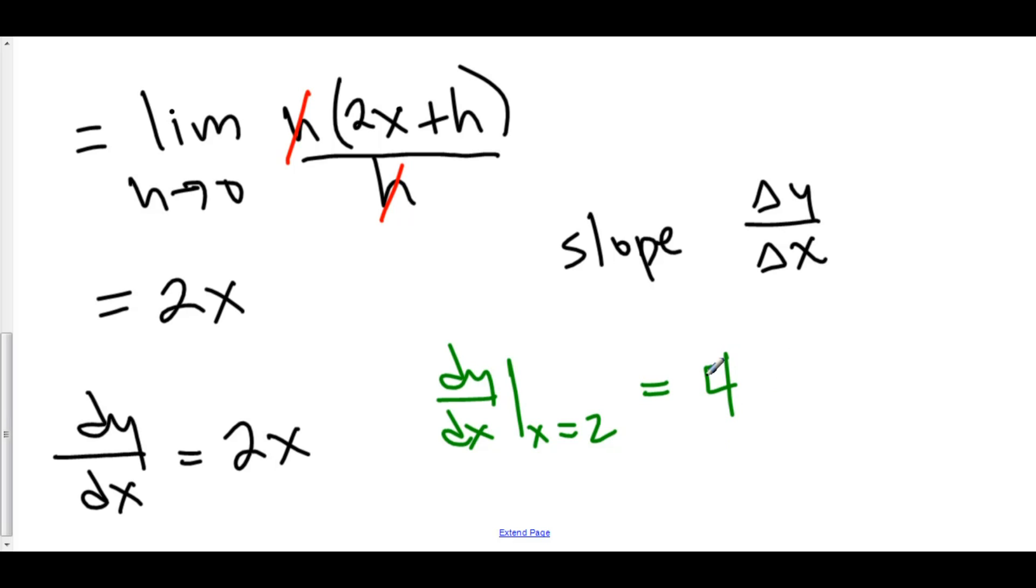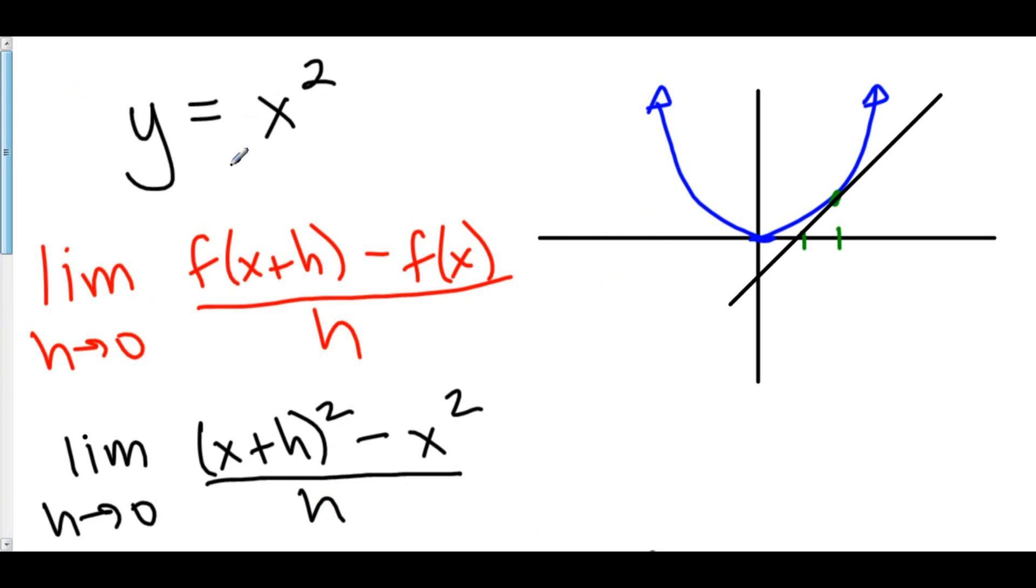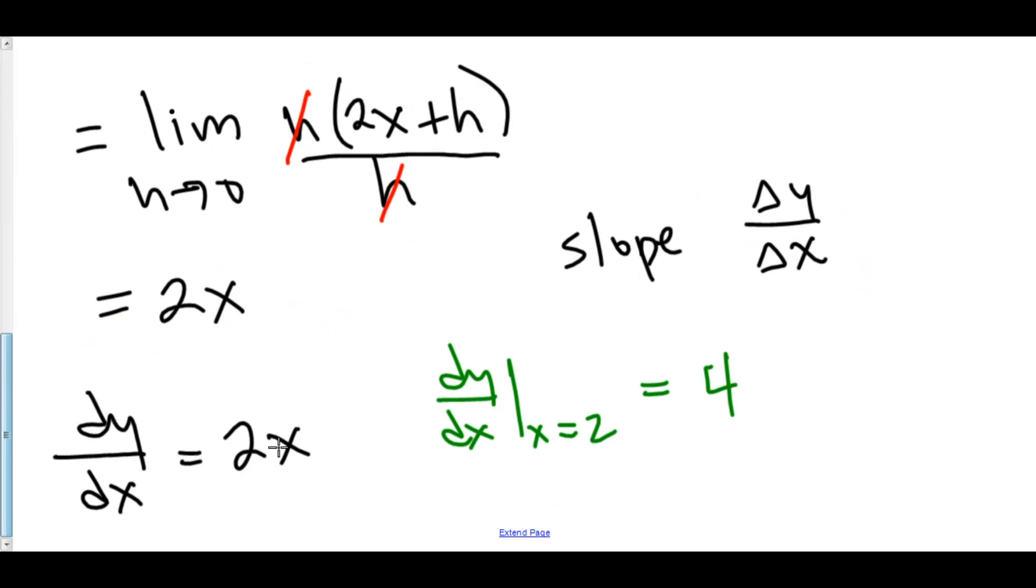If you want to find the slope of the tangent line at x equals 0, you would plug 0 in. 2 times 0 is 0. And, of course, at x equals 0, take a look at what kind of a line would be going on here. This would be tangent to this little valley down here. Well, it turns out a horizontal line like this with slope 0. And that's why dy over dx at x equals 0 is 0.